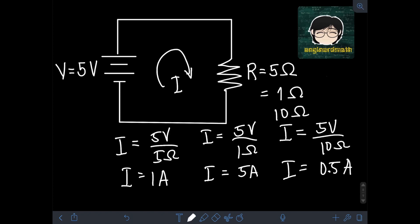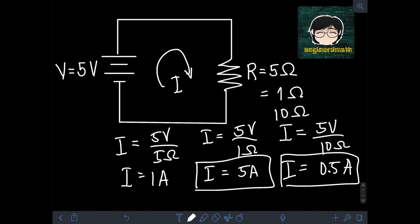As we can see in this example, if we decrease the value of the resistance in a circuit while keeping the voltage constant, we get a higher value for the current. And if we increase the resistance in the circuit while keeping the voltage constant, we get a lower value for the current. This is illustrated in the form of Ohm's Law as current is equal to voltage over resistance — that is, the current is inversely proportional to the resistance, and the voltage V acts as the constant of proportionality.